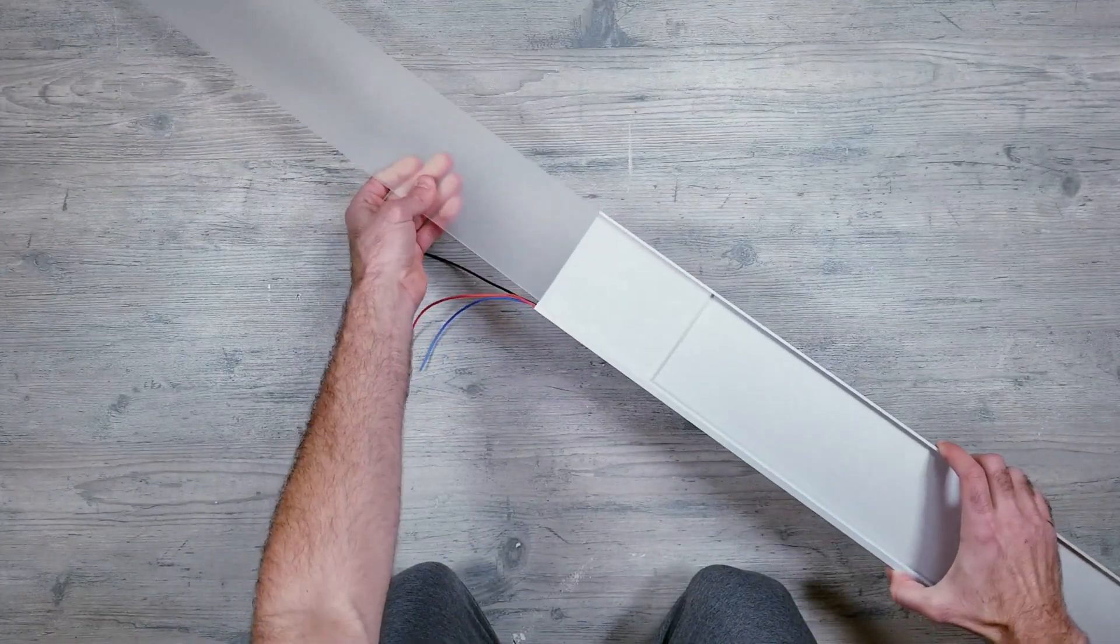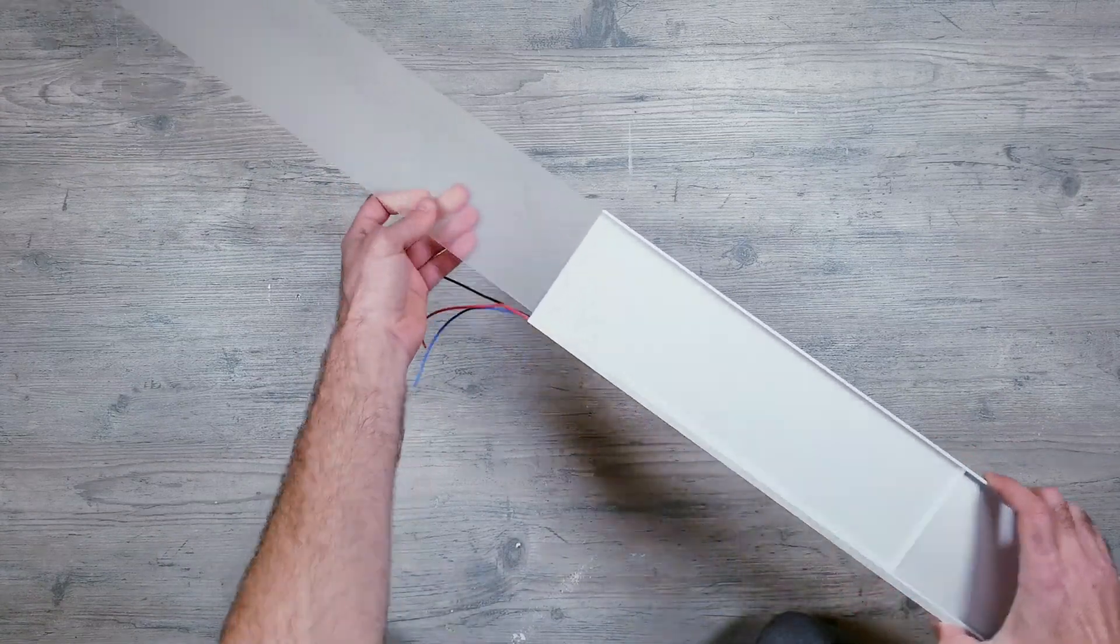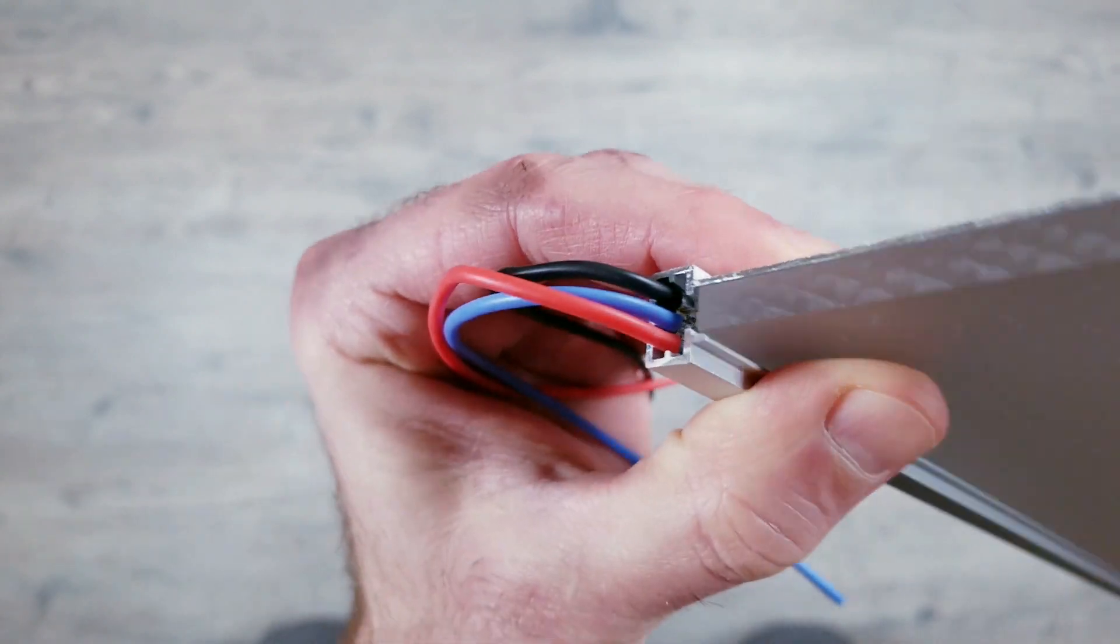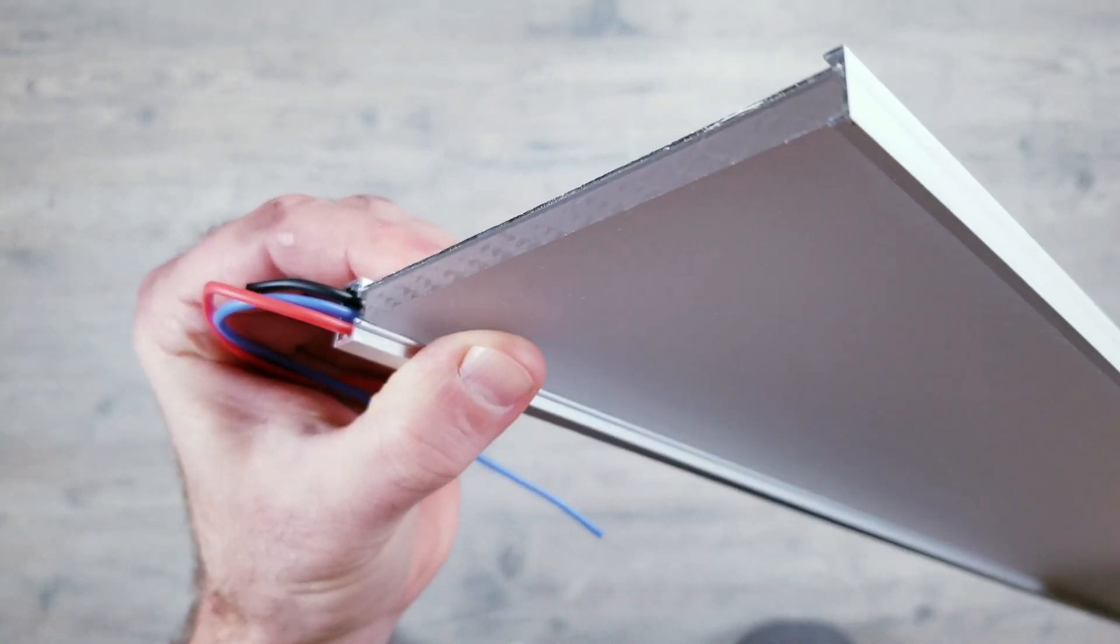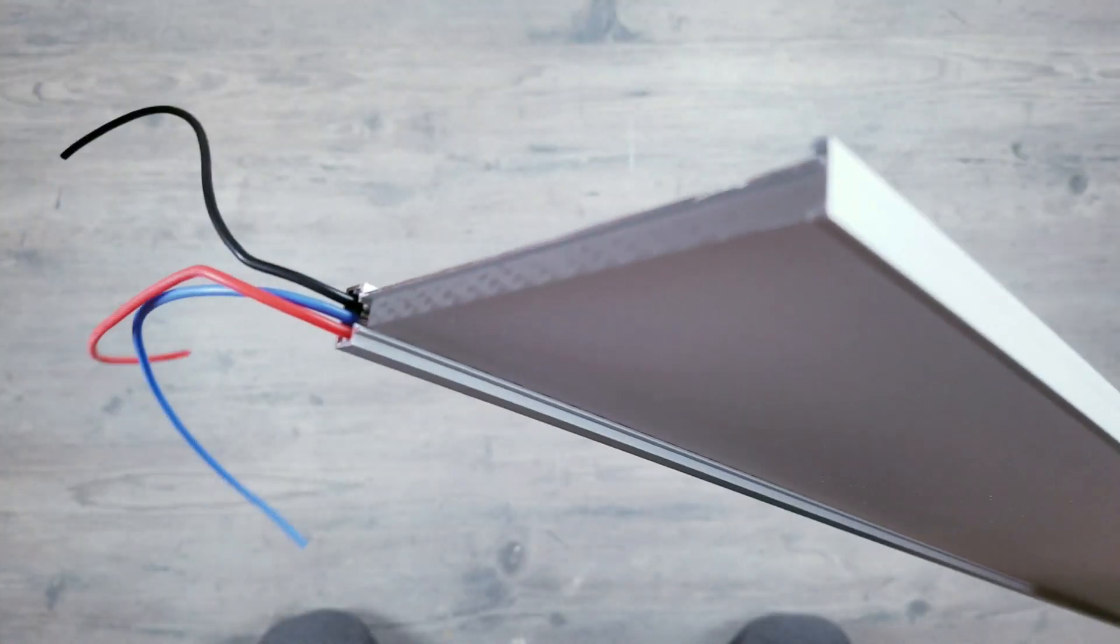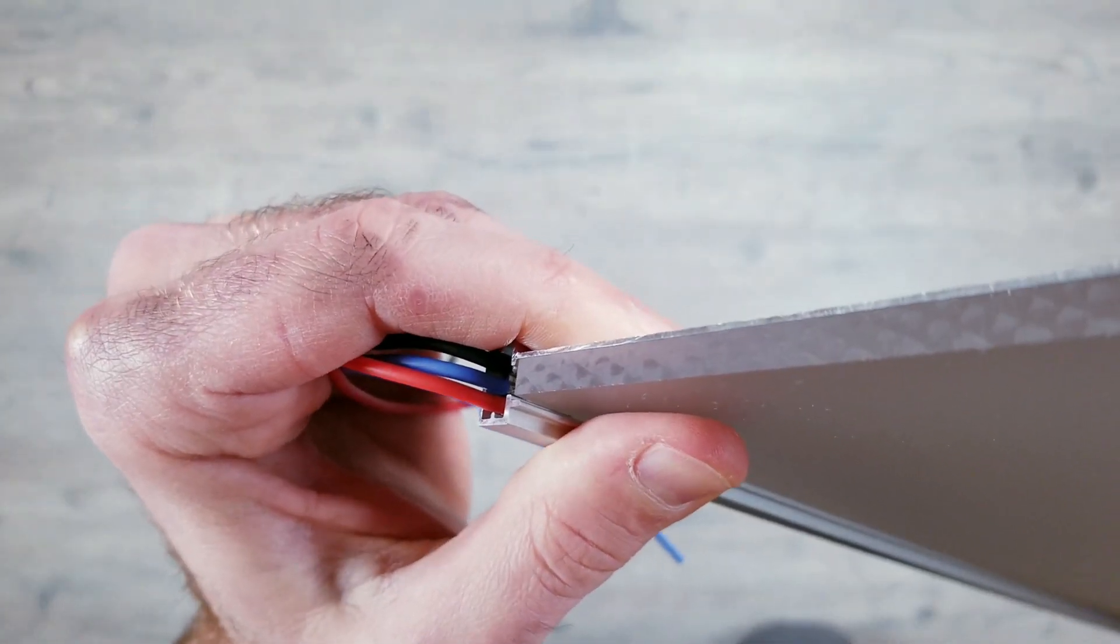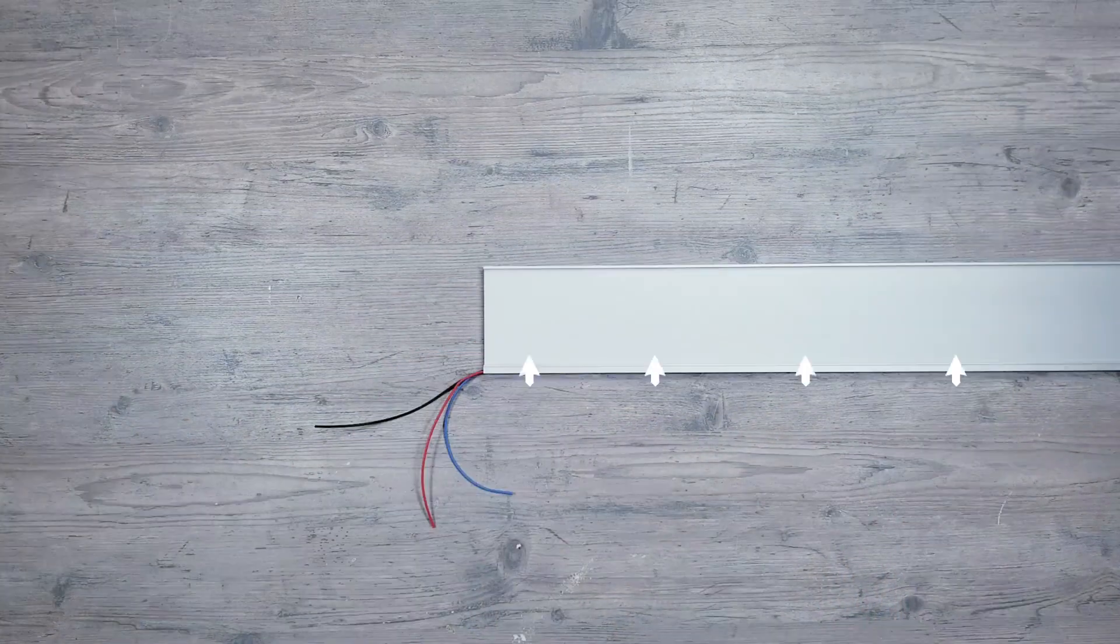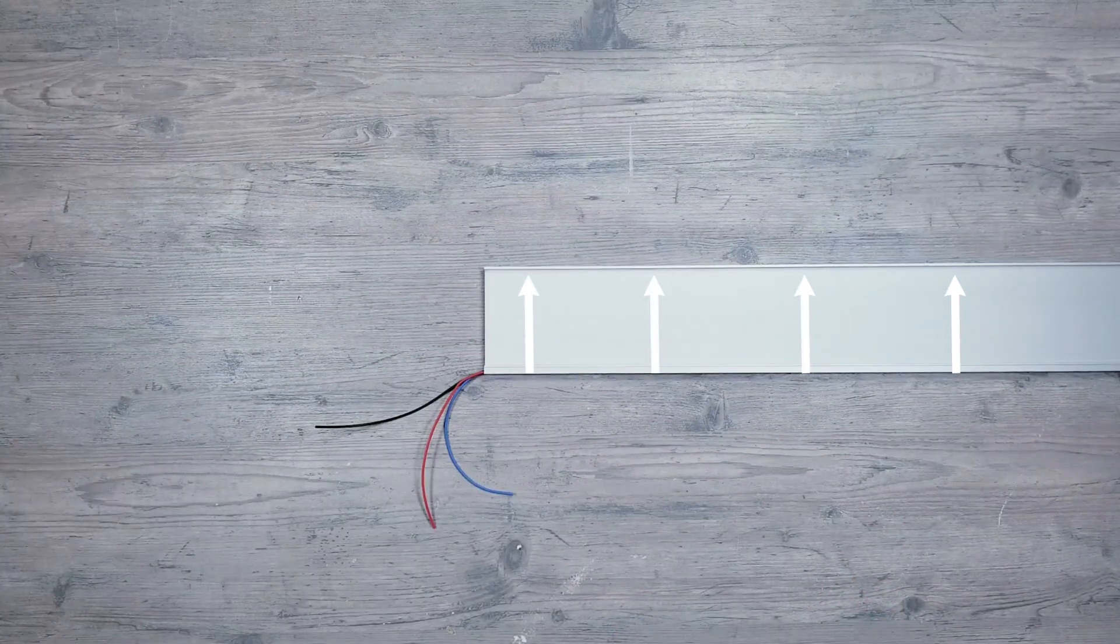Now all that's left is to slide the diffuser in place. One thing I want to mention: if you're installing these below eye level, flip the panels so the LEDs are on top shining down. If they'll be above eye level, have the LEDs at the bottom shining up like their position now.